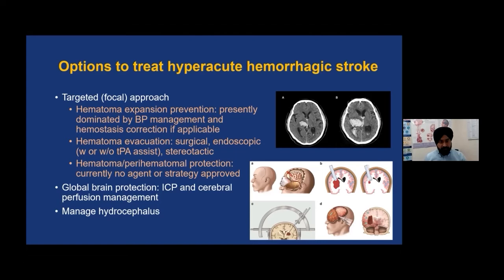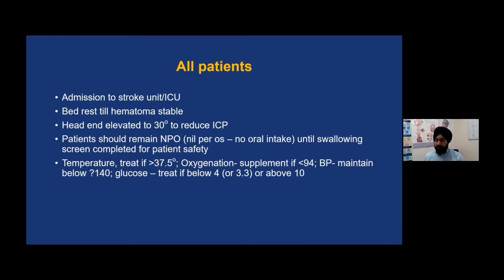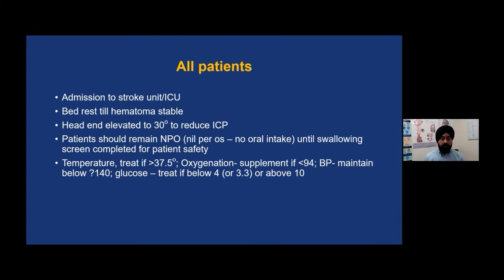All hemorrhagic stroke patients are admitted to either a stroke unit or ICU. Similar to ischemic stroke, bed rest is maintained until the hematoma is proven stable. Head end is usually elevated to 30 degrees in hemorrhage to help reduce intracranial pressure. Patients should be NPO until swallowing screening is completed. Similar to ischemic stroke, temperature is treated at 37.5°C, oxygen is supplemented when needed, and extremes of glucose are treated.